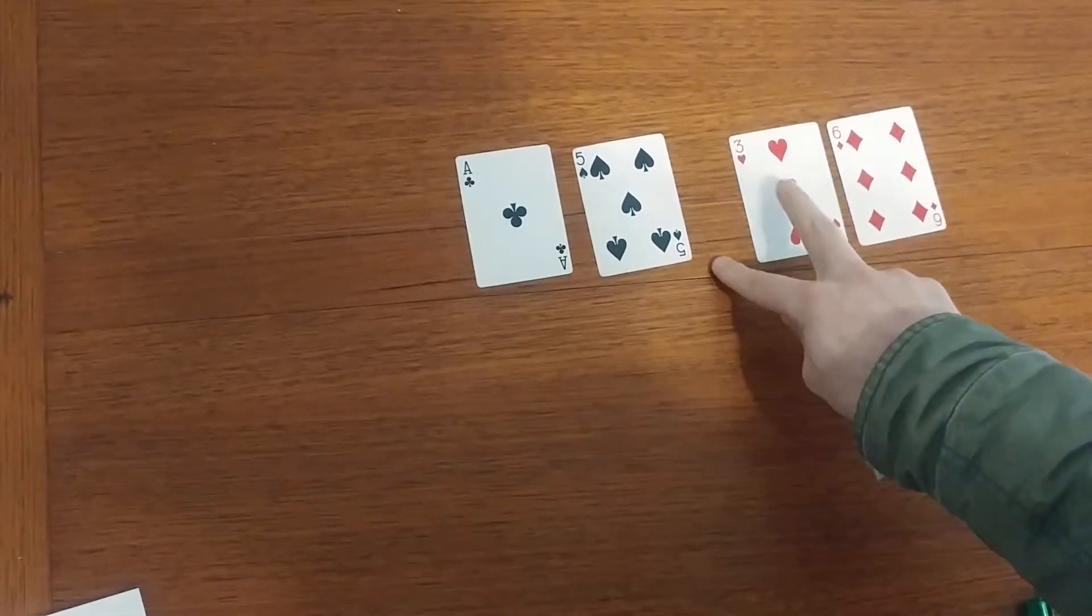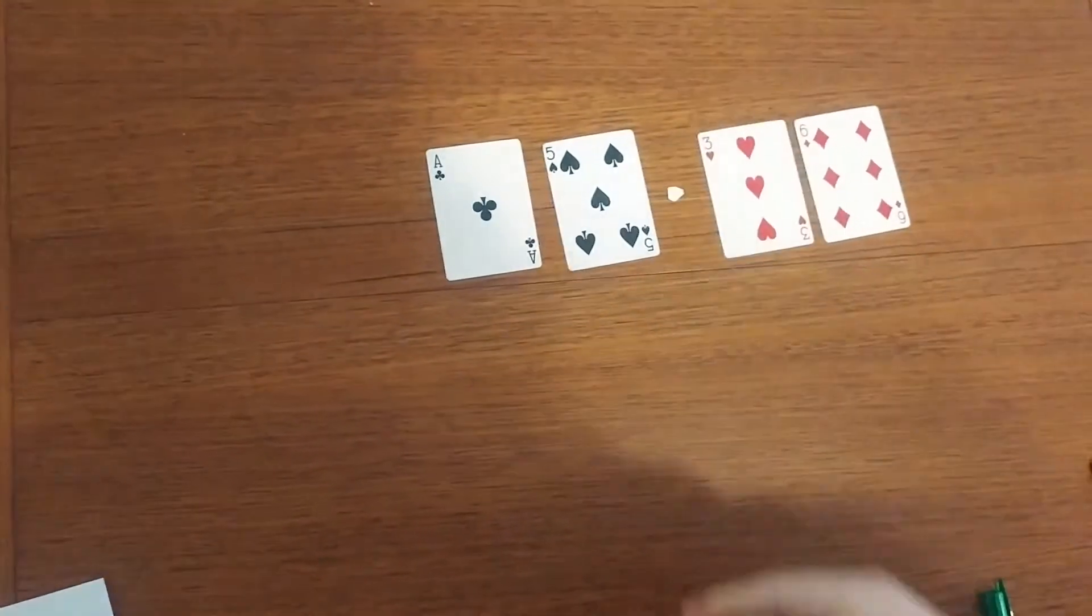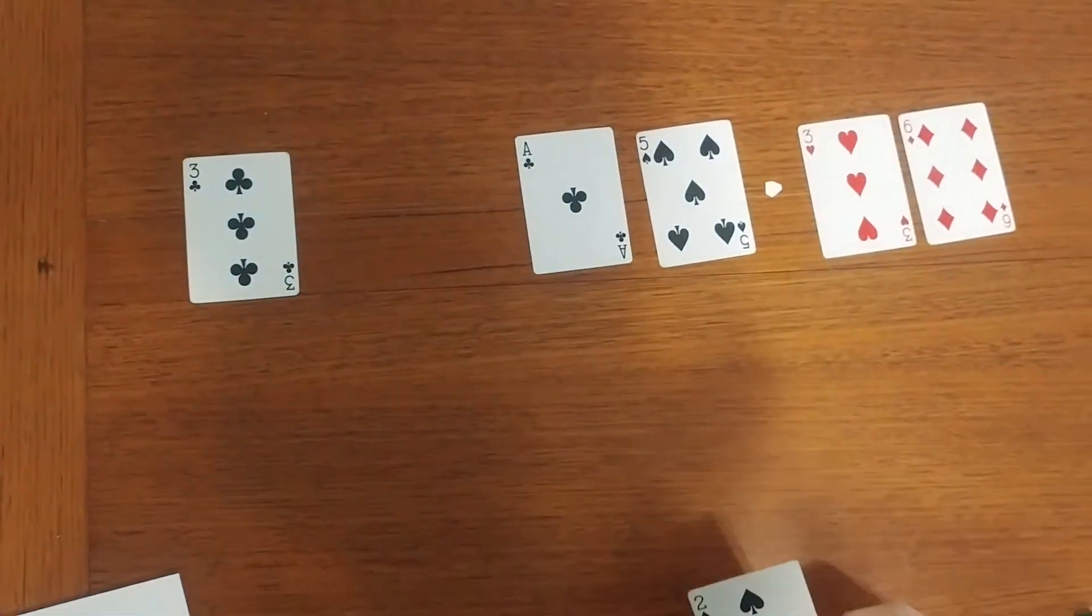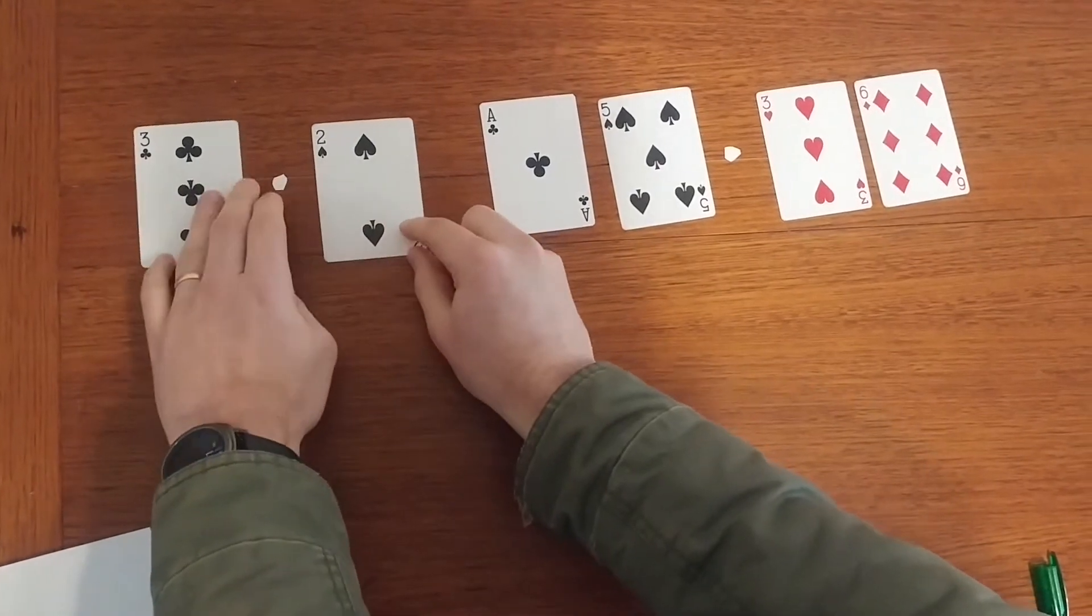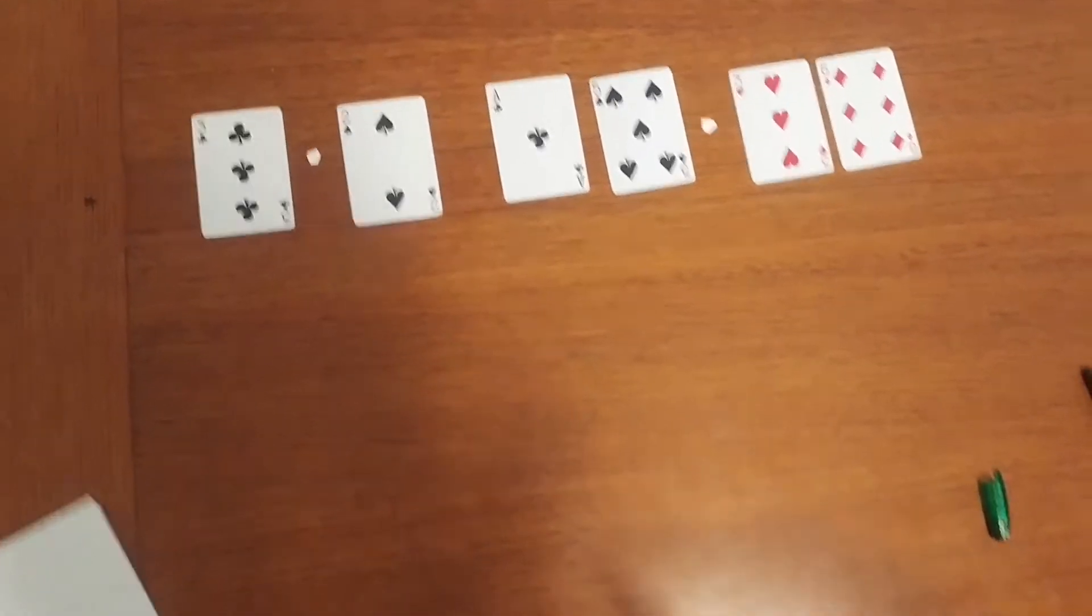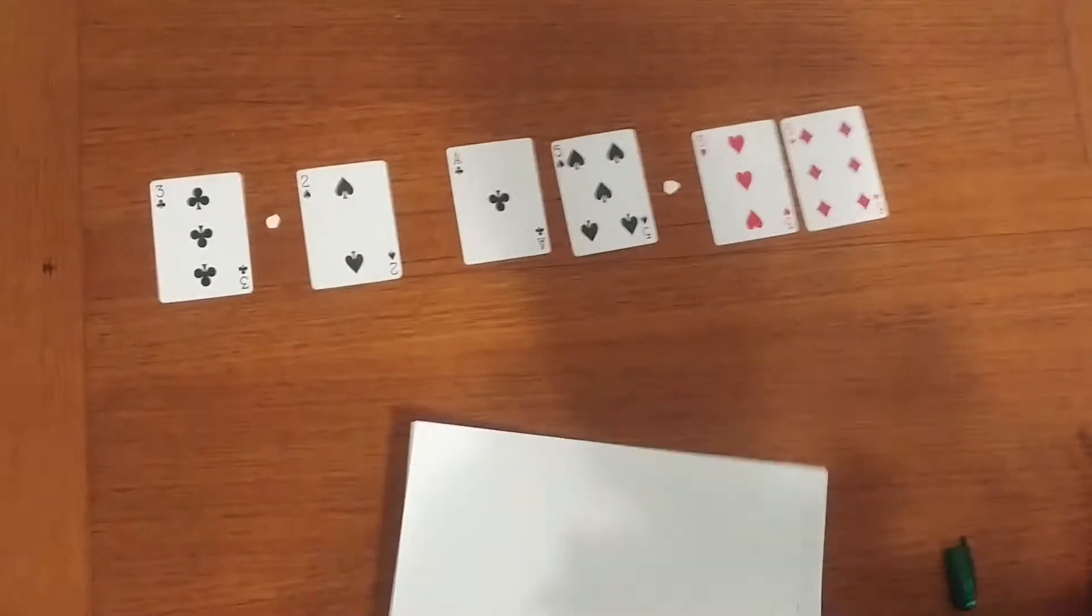So we've got 15.36 and then on this side we're going to have 3.2 because our question is 3.2 into 15.36.